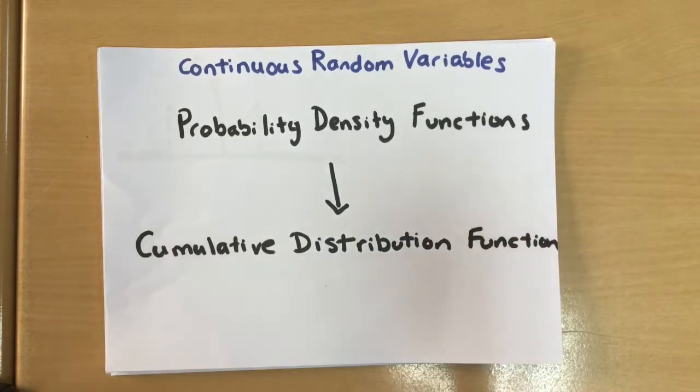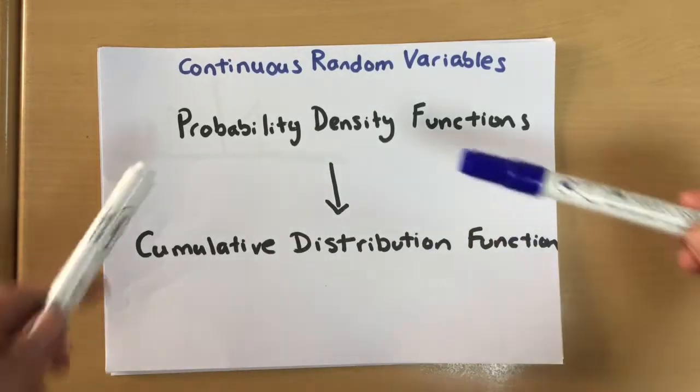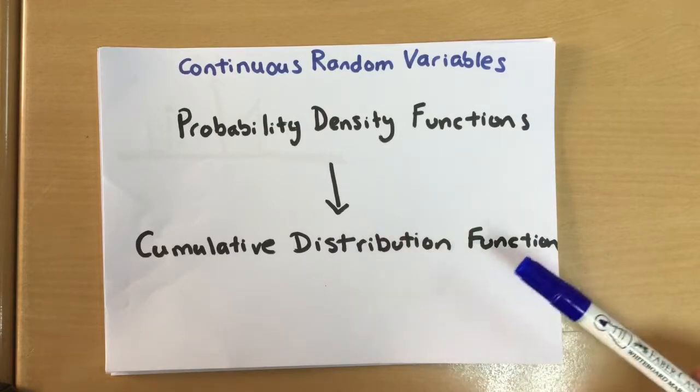Last time we were looking at the continuous random variable and our probability density functions. This time we're moving that onto our cumulative distribution function.